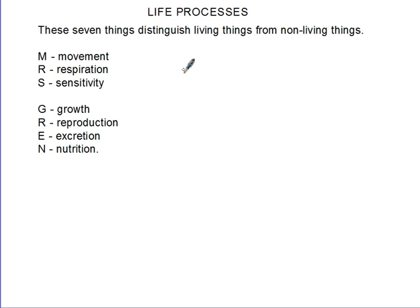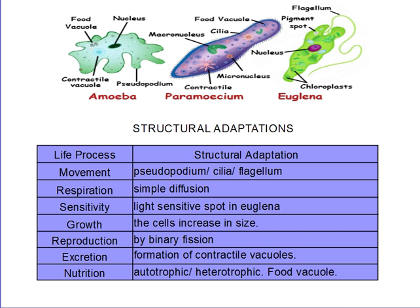Now the seven life processes — we remember we used the acronym MRS GREN to help us remember. M for movement, R for respiration, S for sensitivity, G for growth, R for reproduction, E for excretion, and N for nutrition. That is MRS GREN. Now let's see how these organisms behave.